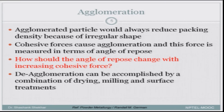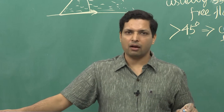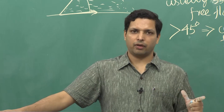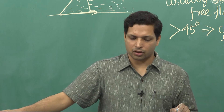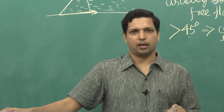To de-agglomerate, the best methods are drying, milling, surface treatment, or placing the powder in a proper solvent. Finally, there is an example problem for the next lecture: calculating xc at the point of maximum packing fraction. Since xc is part of both curve equations, this xc value belongs to both plots. Try it on your own and we will solve it in the next class.